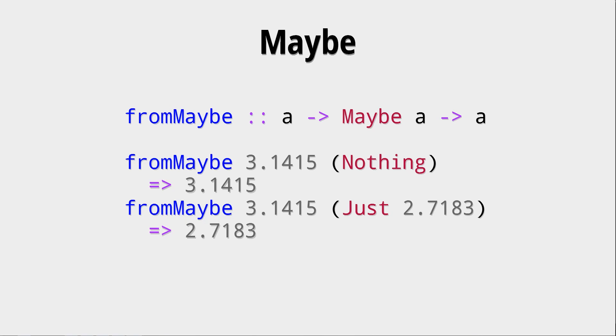It's important that the type of this default value has to be the same type as the polymorphic type of the Maybe that we give to this function. Here's an example where when we give this function a Nothing, we get the default value back, and if we have a Just, we get the value of that Just.